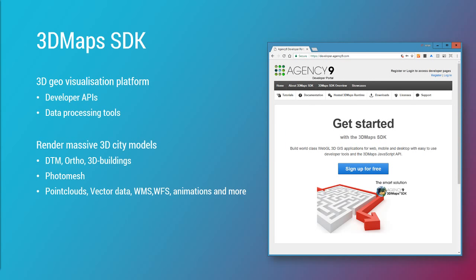The 3D Maps SDK is a 3D visualization platform with developer APIs and data processing tools. We have development partners that can use our platform to build their own custom applications for the web, desktop and mobile.